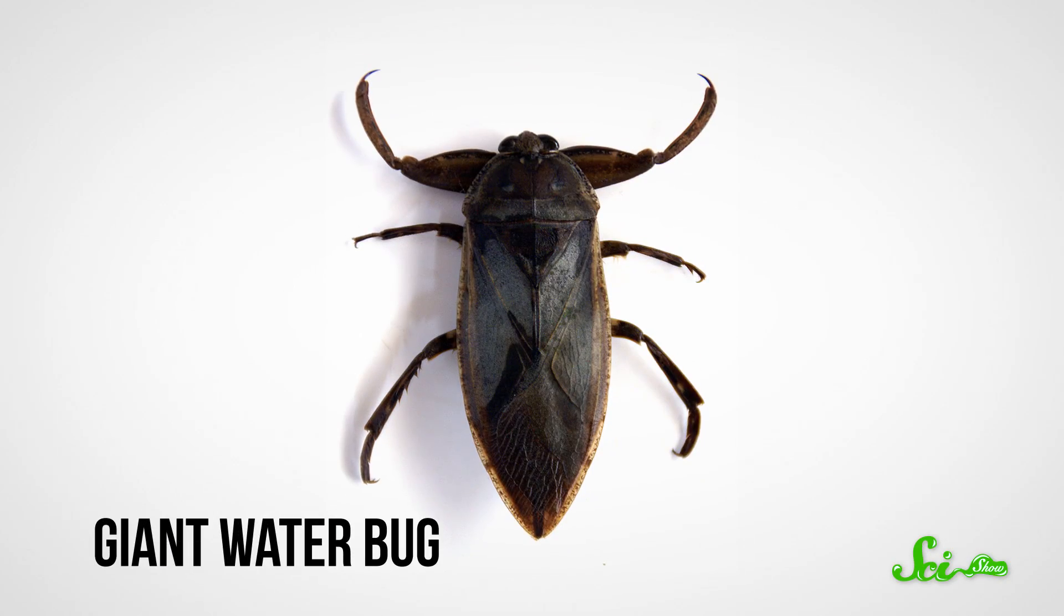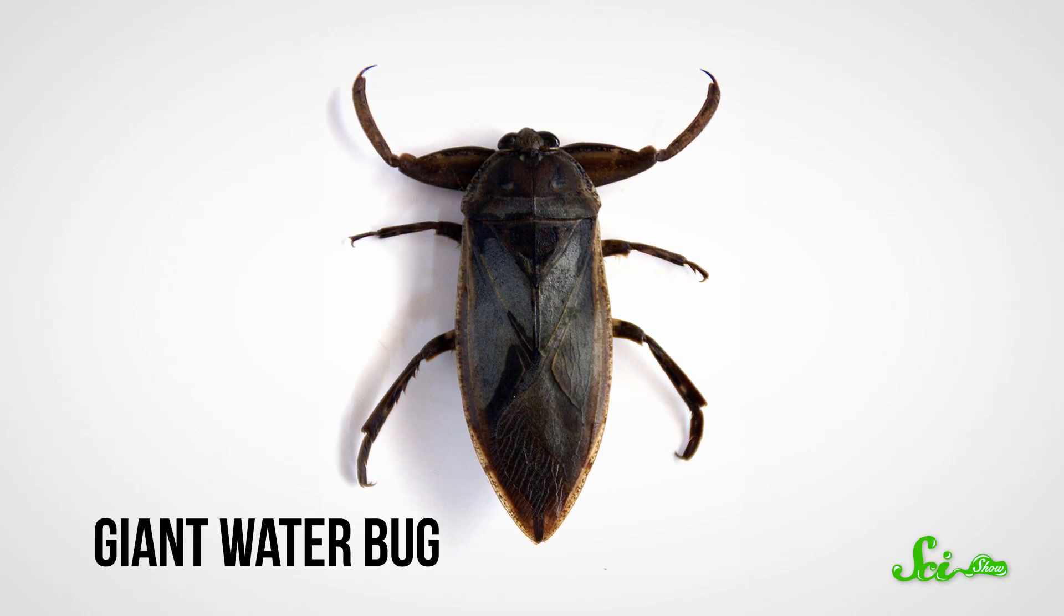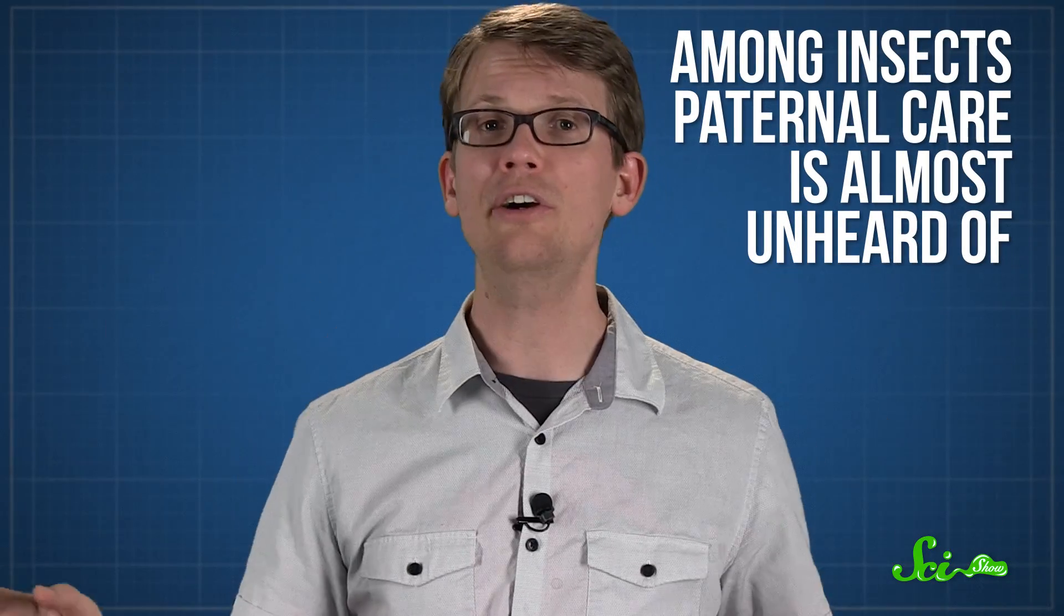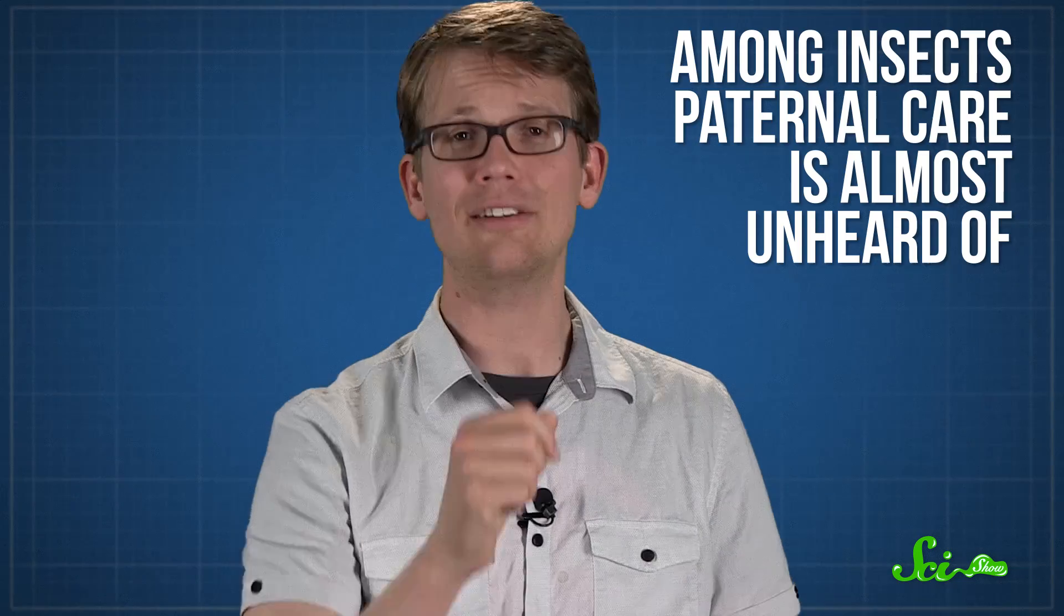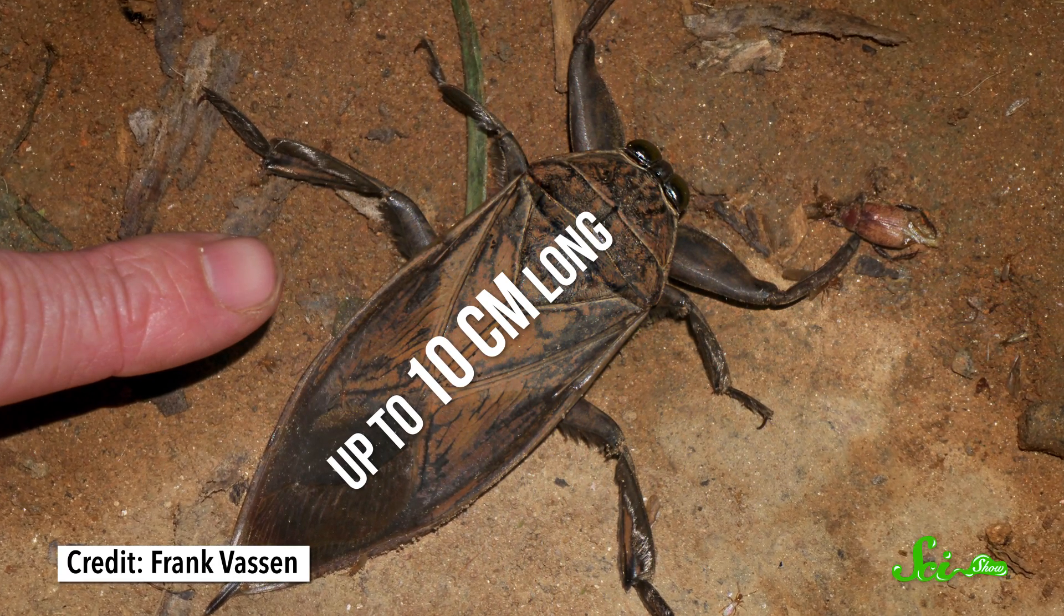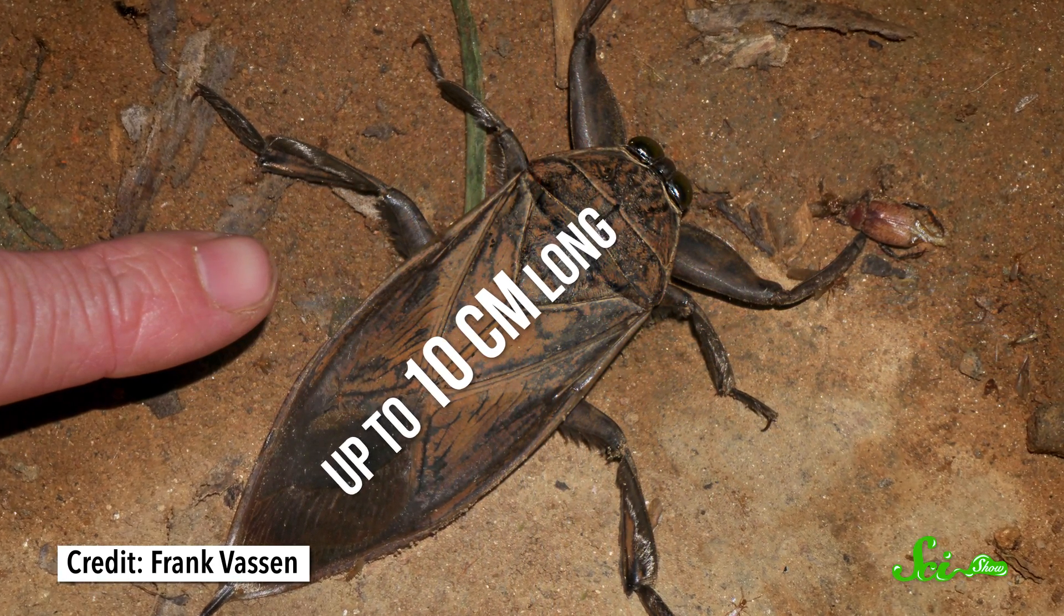Take the giant water bug, for example. In general, parental care of any kind is pretty rare among insects, but paternal care is nearly unheard of, with only 13 known exceptions. Found in freshwater ponds throughout the northern United States and Canada, giant water bugs can be up to 10 centimeters long, and are sometimes charmingly referred to as toe biters. And it's pretty easy to pick a giant water bug dad out of the crowd, because he's the one covered in eggs.